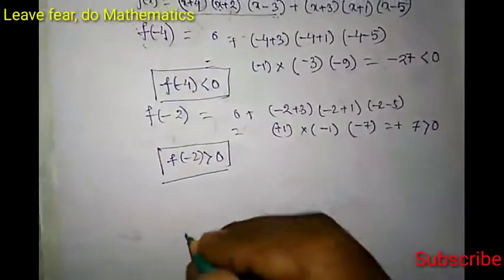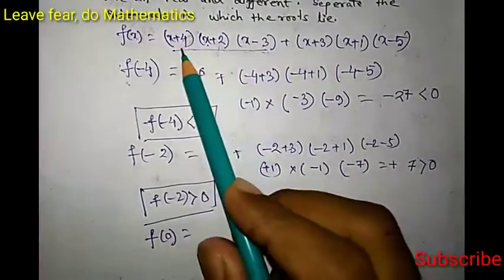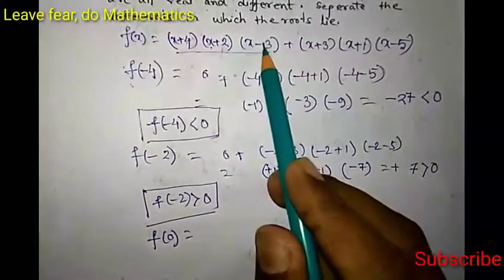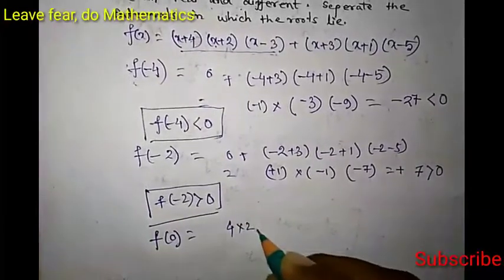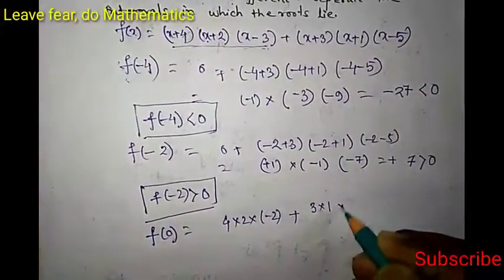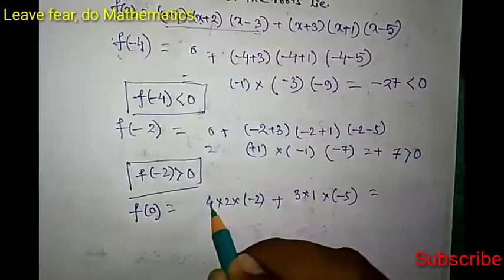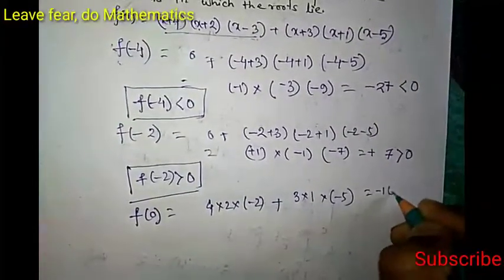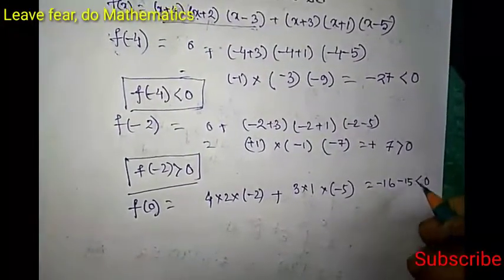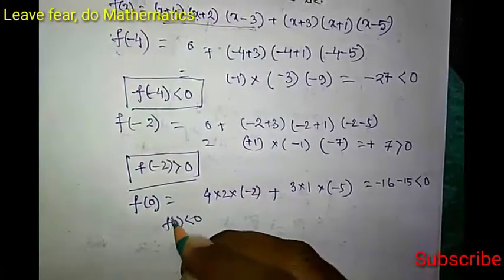Now let us calculate f(0). Putting x = 0, the first part gives 4 × 2 × (-3) = -16, and the second part gives 3 × 1 × (-5) = -15. So f(0) = -16 + (-15) = -31, which is less than 0. So f(0) < 0.